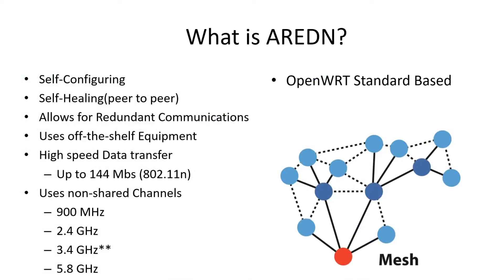So what is AREDN? AREDN is a self-configuring, self-healing system. I say self-configuring because most of the nitty-gritty — IP addresses, routing tables, things like that — has all been figured out. You don't have to figure that out. When you set up a node, once you've installed the firmware, all you have to tell it is your call sign (which is the SSID, much like we use in packet or APRS), the RF channel you're using, and the bandwidth — 10 MHz, 20 MHz, 5 MHz, things like that. You set it and you go. You can adjust power if needed, but you don't have to.